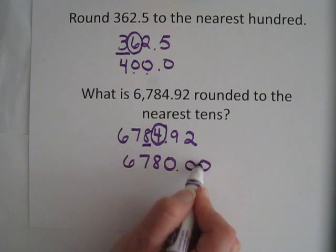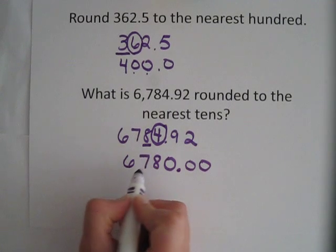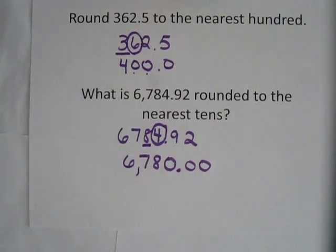Again, I could put zeros over here, but they're not necessary after the decimal. But this one's a placeholder, so you have to have that. So our answer is 6,780.